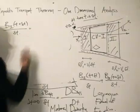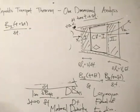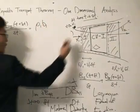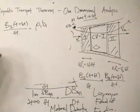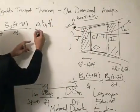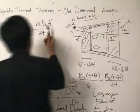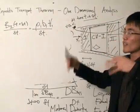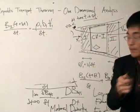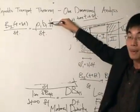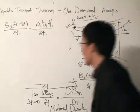Divided by change in time. Remember, the intensive property is the increase of a certain parameter with respect to mass. So if we want to get the mass, we need the density multiplied by the volume — and that gives us the mass of this section. Multiply that by the intensive property, we get the extensive property. Clear enough.